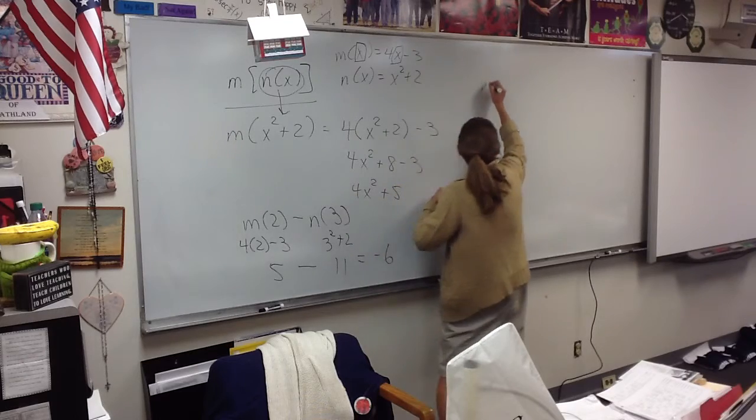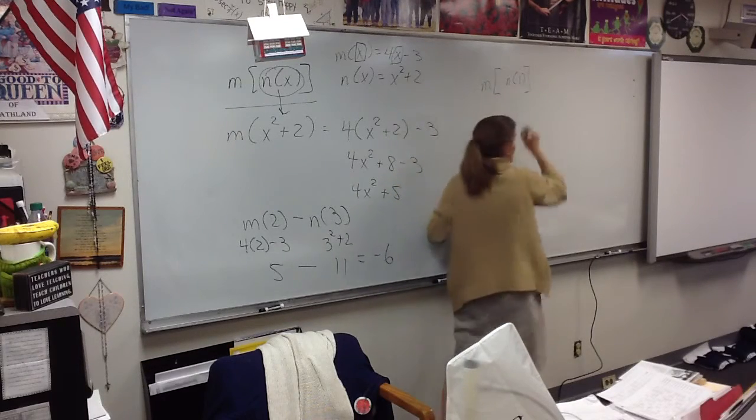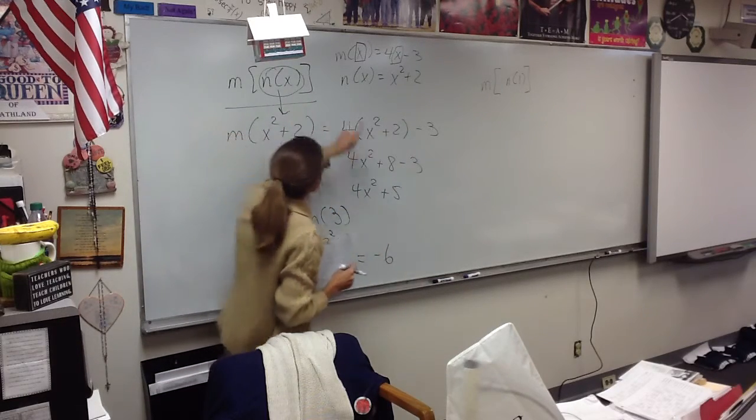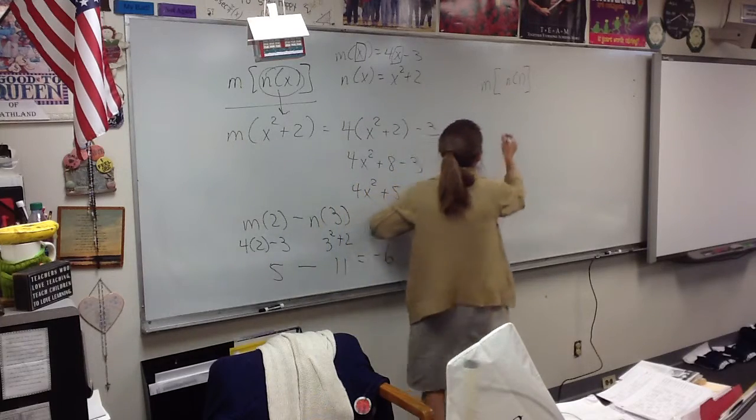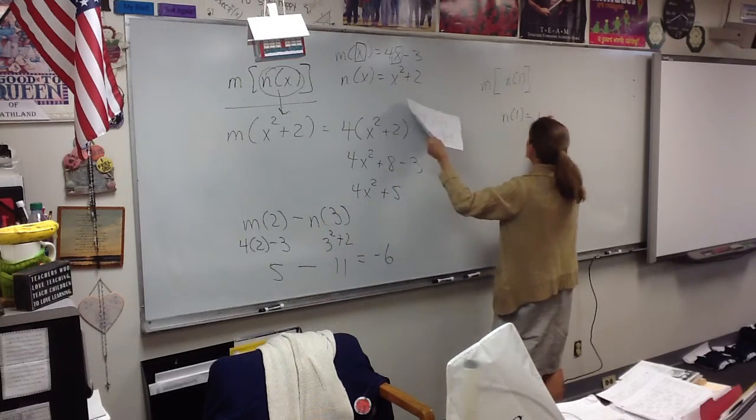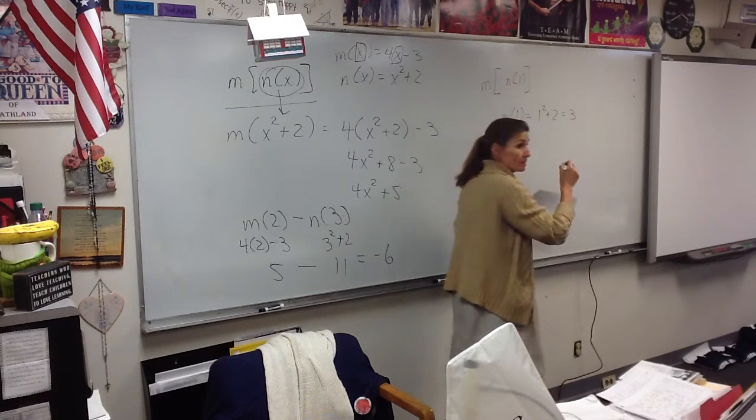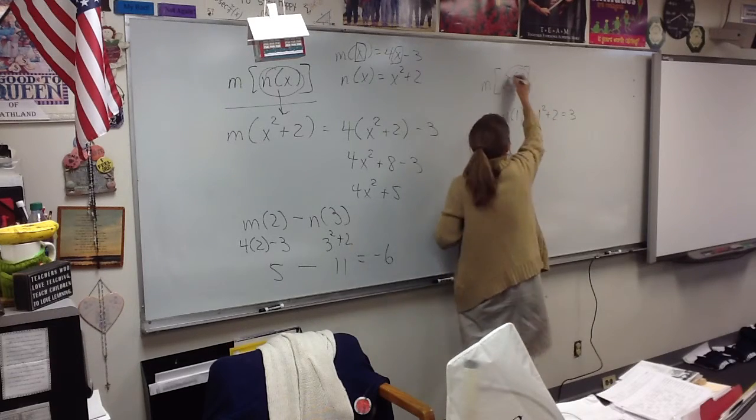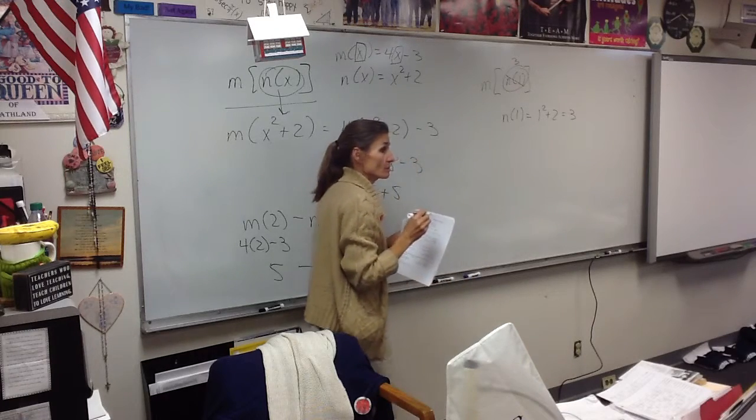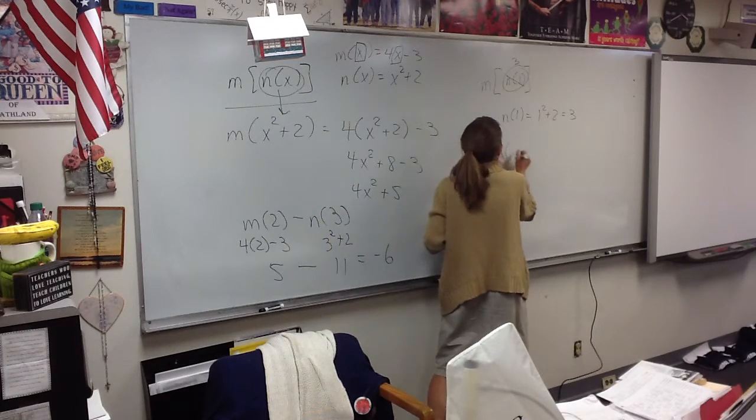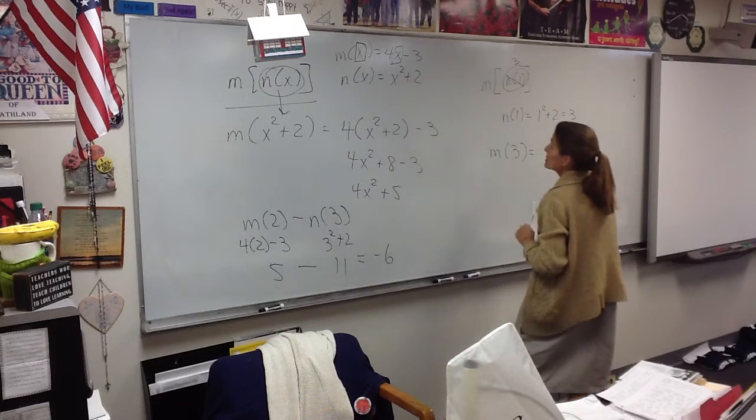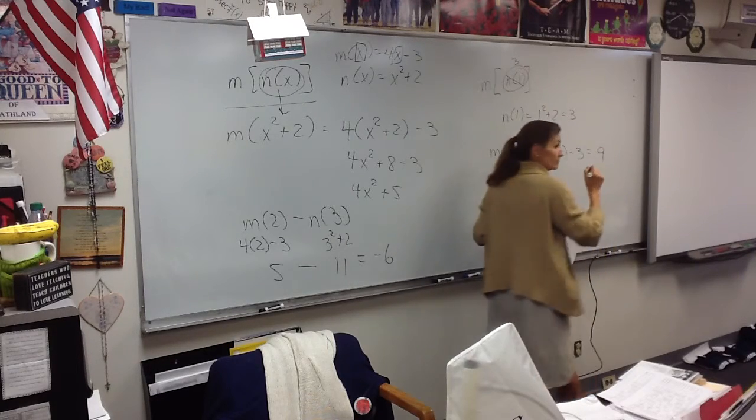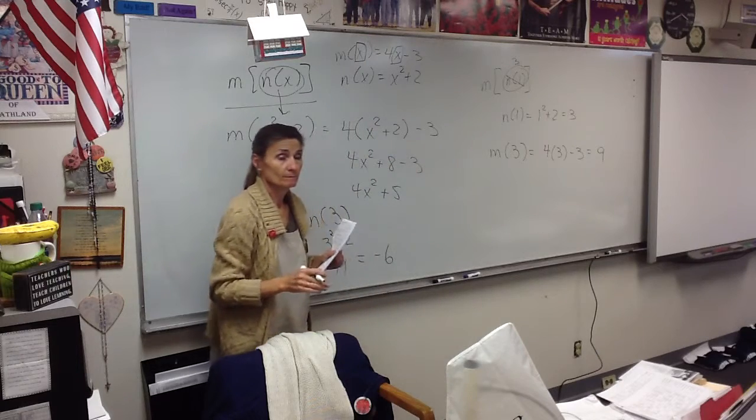Remember, day after tomorrow, you have to be able to do this. So you need to ask me if you're not sure about where something came from. Next. m of n of 1. Where do I start? Put 1 into n. Very good. So here's n. I'm going to put 1 in there. So n of 1 is 1 squared plus 2, which is 3. So this is 3. So now what am I finding? m of 3. Very good, Zach. So that would be 4 times 3 minus 3, which is 9. And that's your final answer.